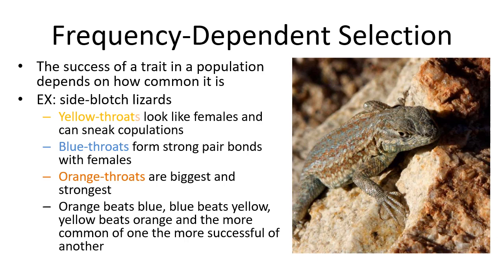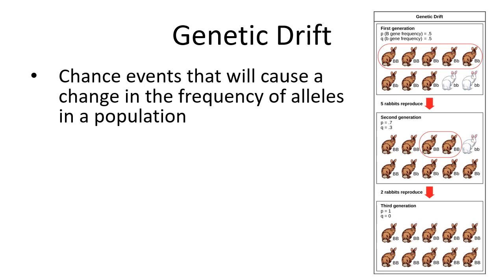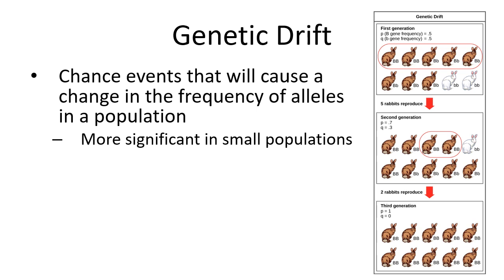Other forces of evolution can occur randomly, not through natural selection. Genetic drift is when allele frequencies randomly change in a population. It's definitely more significant in small or island populations with very few individuals. It's random — there's no directional selection — just by chance a new small population ends up represented with different alleles.